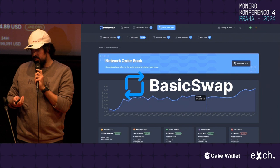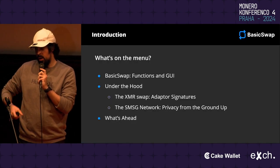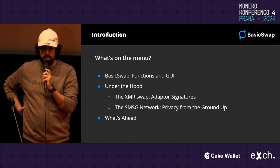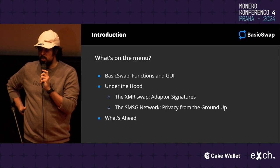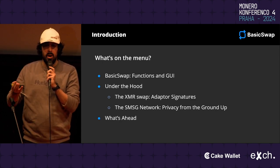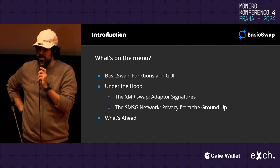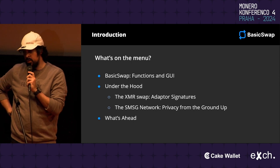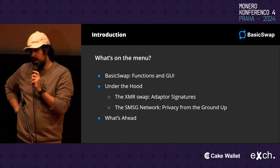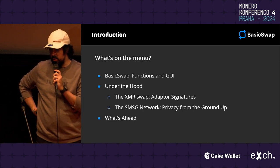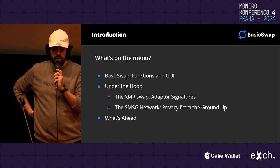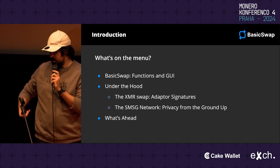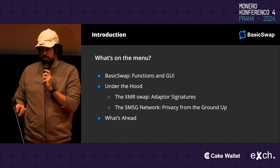So quite simply, BasicSwap is two things. It enables adapter signature swaps for XMR and other coins like Bitcoin, Litecoin, coins like Firo and Dash as well. We'll have our friends from WownCoin soon integrated into the DEX, and we'll also have our friends at Decred. The structure of this presentation will cover the functions and GUI of BasicSwap, the adapter signature swaps and the SMSG network under the hood, and what's ahead on the roadmap.